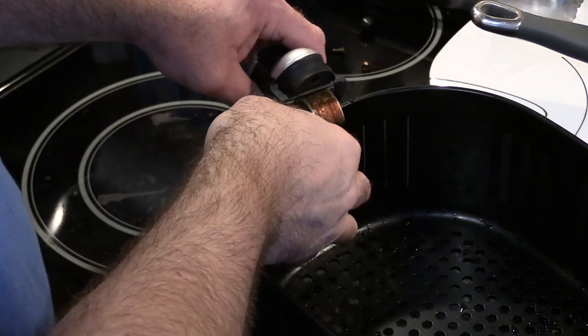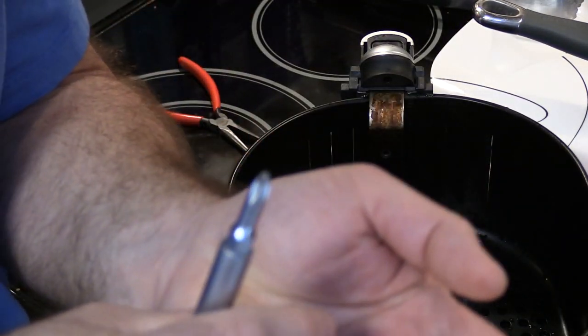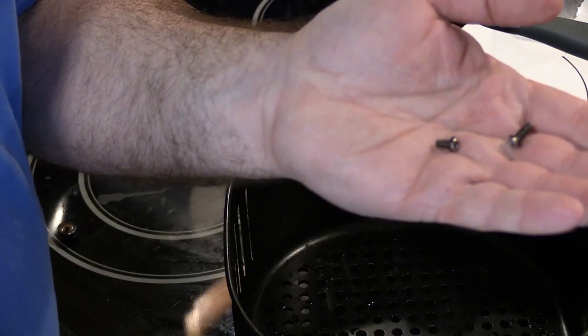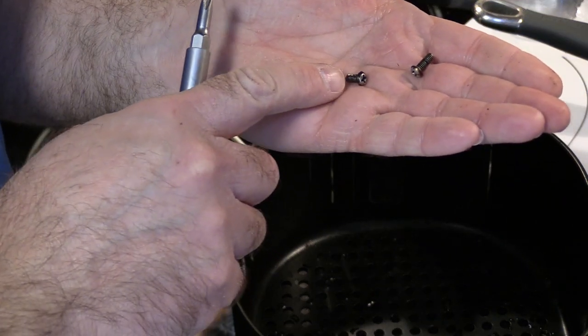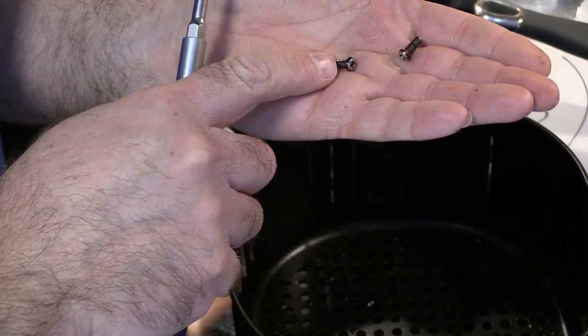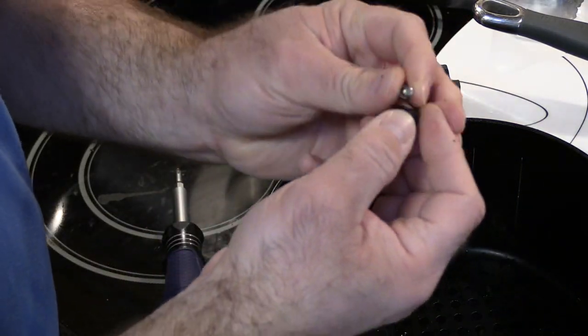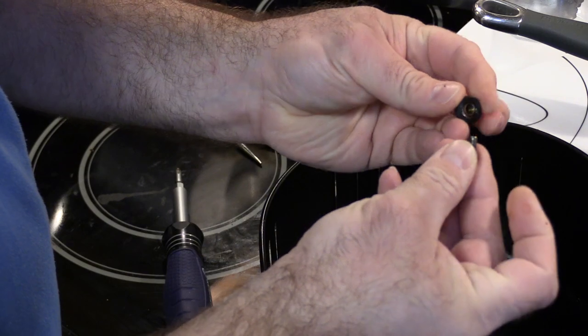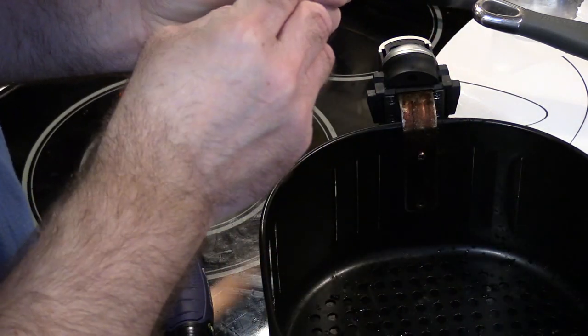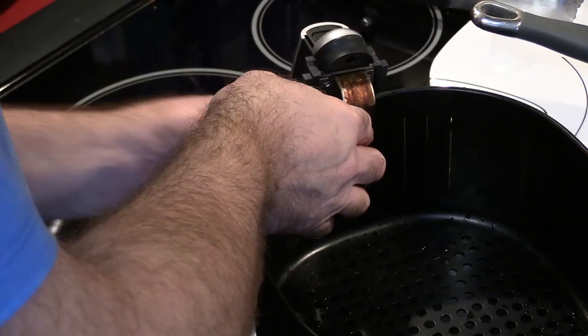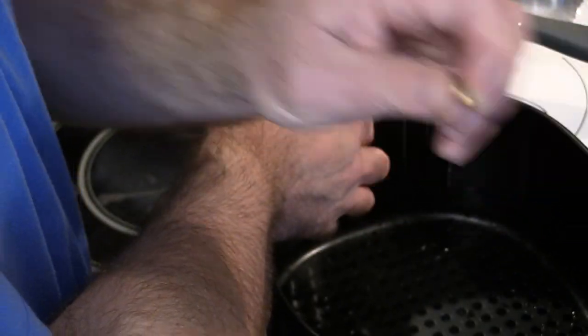So just pop the screw in. Now I want you to look at something here. There's two different length screws. The shorter screw needs to go up top. And the easiest way not to screw that up is to just keep the nut and the screw together when you take it apart. Now remember this metal cap one goes on the top.